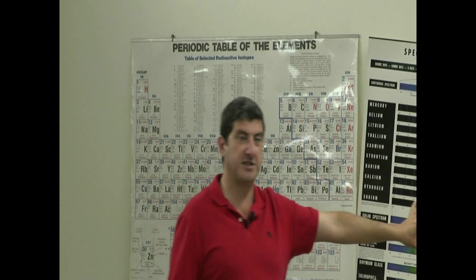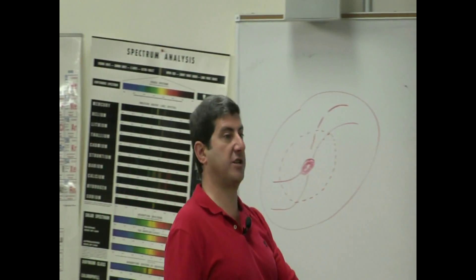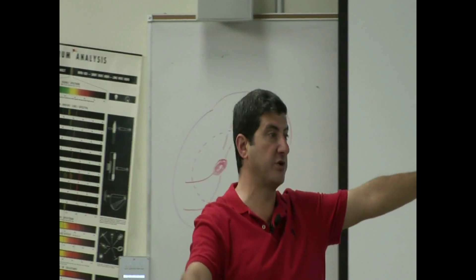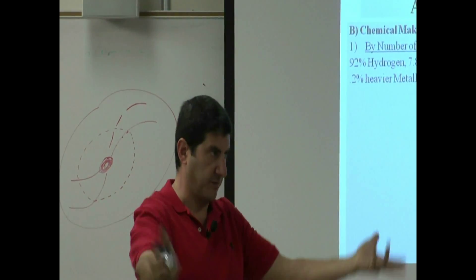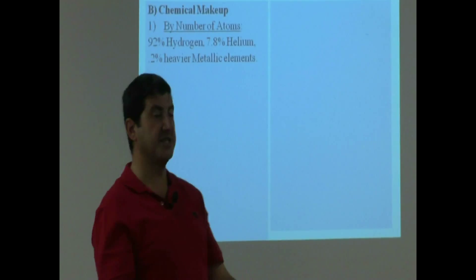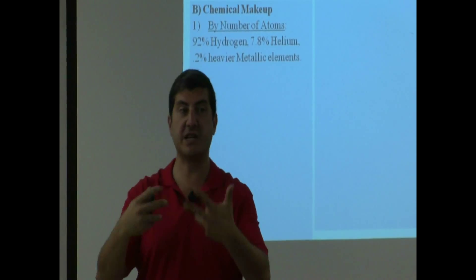And then the rest of all of these elements were created in stars. They were generated in the stars. And then when stars blew up, then they spewed all these elements to the universe. Then from generations and generations of new stars forming, these other elements started becoming more abundant.